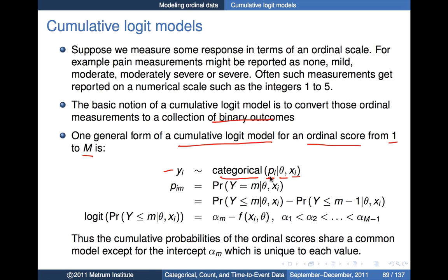For one particular element p_im, where lowercase m represents the probability that our observation equals m, we can write that probability in terms of the difference between cumulative probabilities. By cumulative probabilities I mean the probability that y is less than or equal to M. For example, y less than or equal to 2 means the probability that y equals 1 or 2. Subtracting the probability that y is less than or equal to M minus 1 gives us the probability that y equals M.